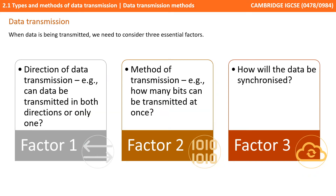When data is being transmitted we need to consider three essential factors. Firstly, the direction of data transmission — for example, can the data be sent in one direction or both? The method of transmission — for example, how many bits can be transmitted at once? And finally, how will the data be synchronised?